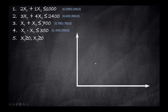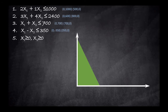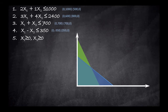Let's start by plotting the first constraint — it is labeled with a green line, and all the area below that line is the feasible area for that constraint. Now adding constraint number two as the blue line with its shaded area. As we proceed, you can see that where the two shaded areas overlap is the area that has feasibility for both constraints.